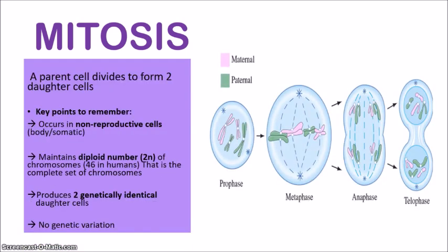Mitosis is the cell division which involves one parent cell dividing to form two daughter cells. The key points to remember about mitosis: first, it occurs in non-reproductive cells — all the cells in our body not involved in sexual reproduction. That includes every single cell except for the sperm and the egg, which are the gametes. So always remember that mitosis produces non-reproductive cells.